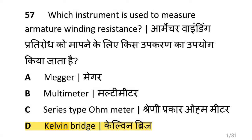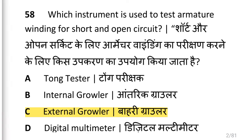Dear friends, we are going to see DC motor. Which instrument is used to measure armature winding resistance? That is the Kelvin bridge. Which instrument is used to test armature winding for short and open circuit? That is the external growler.